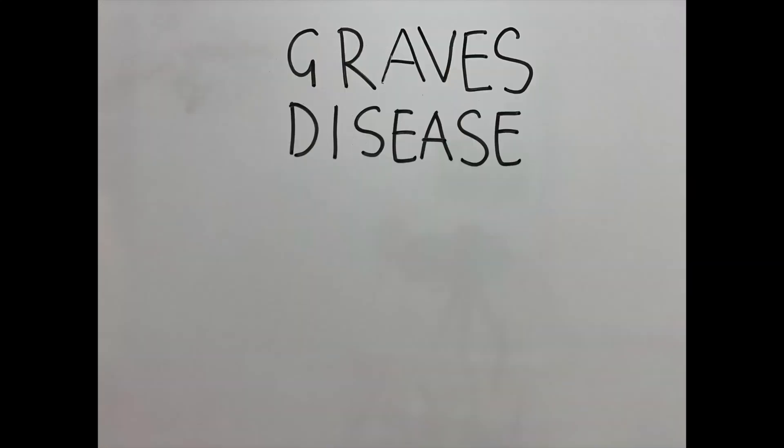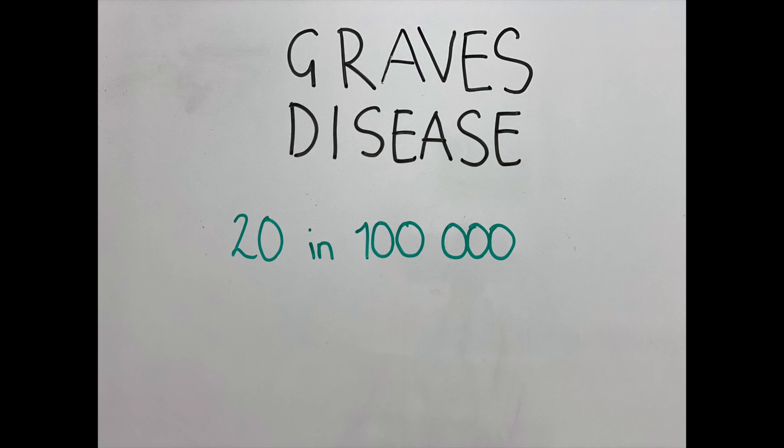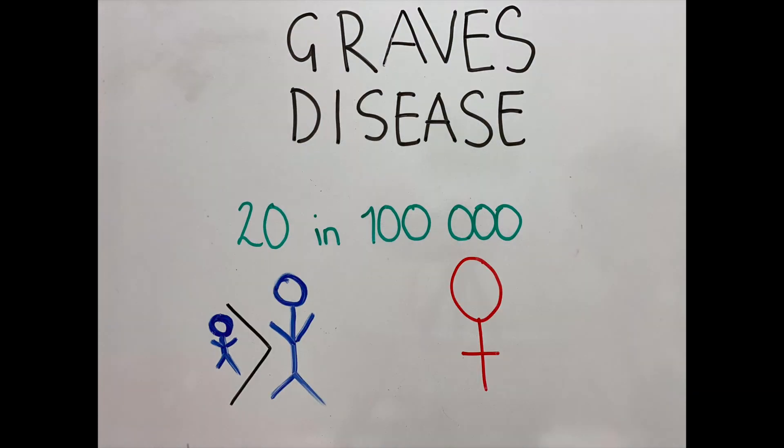Graves' disease is the most common form of hyperthyroidism in the Western world, with 20 to 100,000 people being diagnosed with the condition every year. It occurs more often in younger populations and women, since it's an autoimmune disease. Women are 10 times more likely to have it than men.